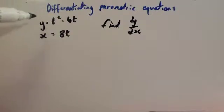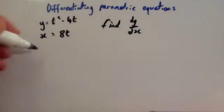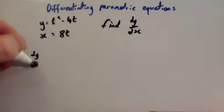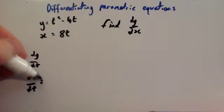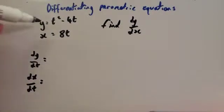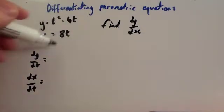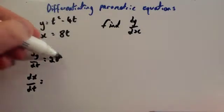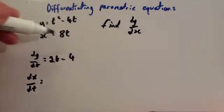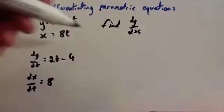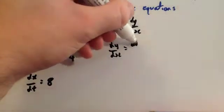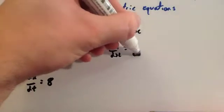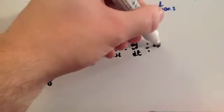So if we had y equals t squared minus 4t and x equals 8t, we can find dy/dx. First you want to find dy/dt and also dx/dt. So dy/dt — differentiating y with respect to t — gives you 2t minus 4. And dx/dt — differentiating x with respect to t — gives you 8. Then you use the formula dy/dx equals dy/dt divided by dx/dt.